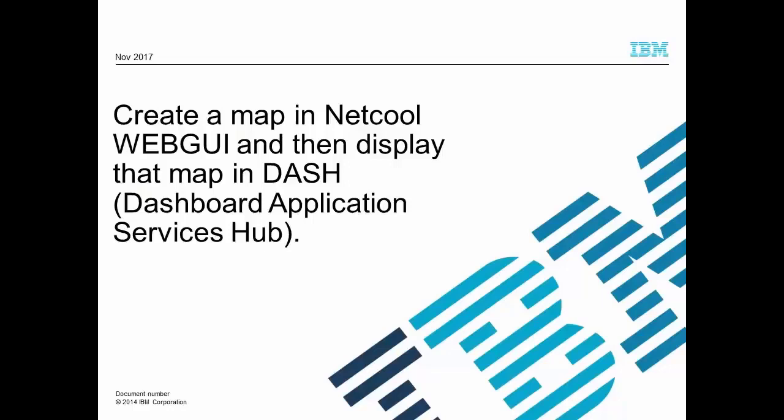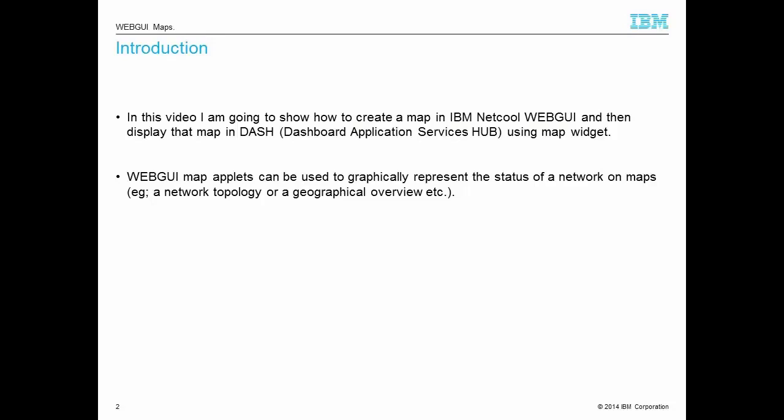In this video, I am going to show how to create a map in WebGui and then display that map in Dash. WebGui map applets can be used to graphically represent the status of a network on a map. For example, a network topology or a geographical overview of the network.